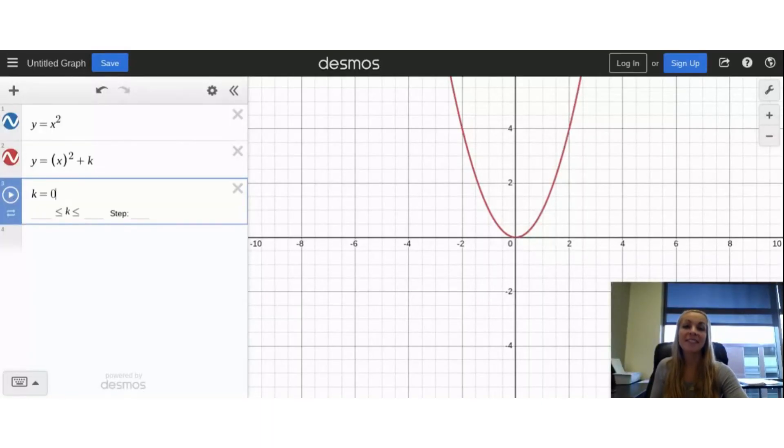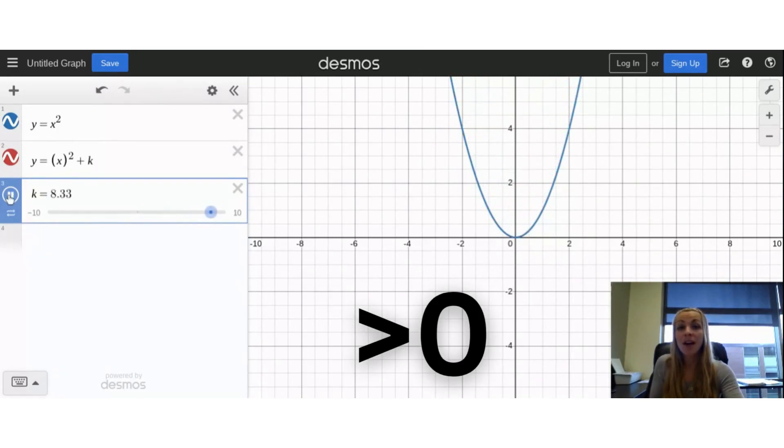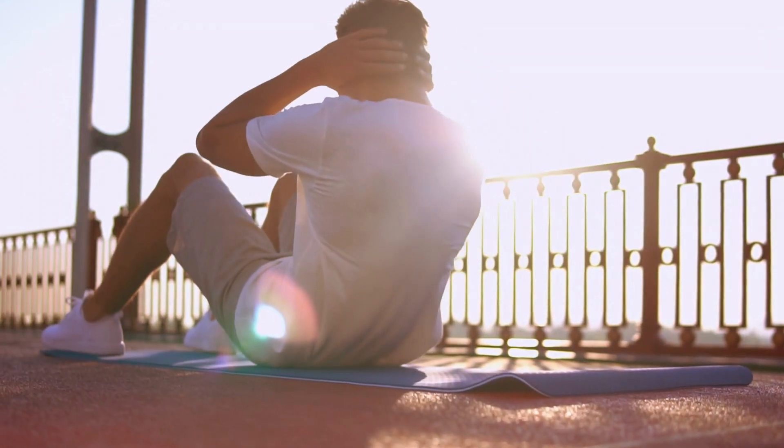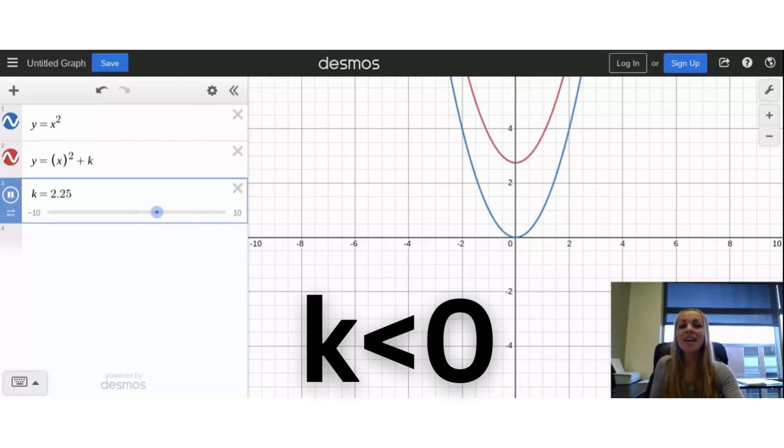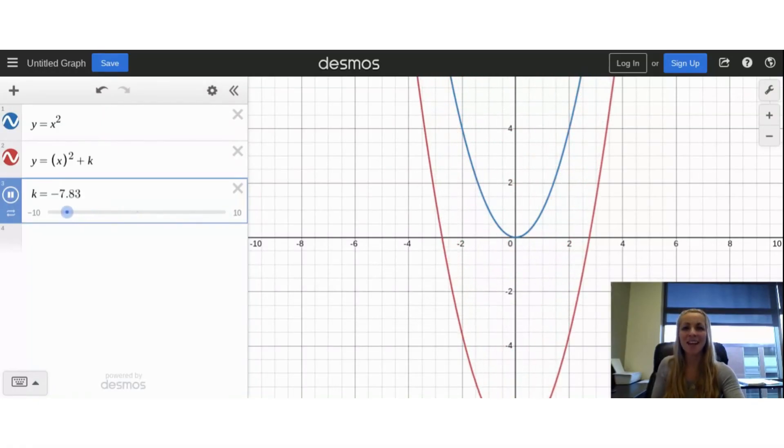The last parameter we'll explore is k, the up and down movement of the graph. Right now, k is at 0, so it looks like the parent graph, y equals x squared. But watch as I press play. When k is greater than 0, it goes up. And when k is less than 0, it goes down.